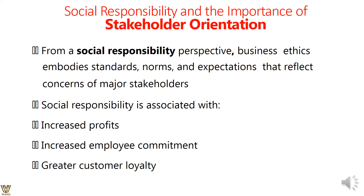Ethics is about standard norms and expectations. For example, employing children for a job and paying them half wages is unethical: you are utilizing labor below minimum age and also reducing wages. That is a double breach of conduct — both employing underage labor and reducing wages — and that is unpardonable.